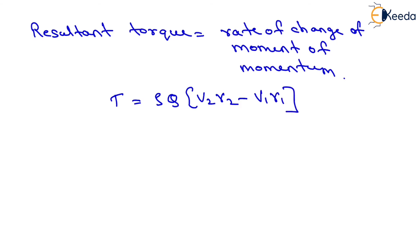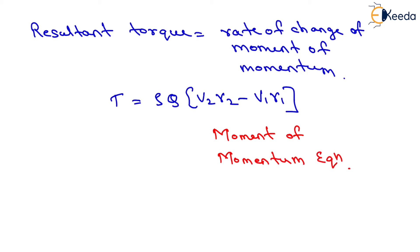This equation is known as the Moment of Momentum Equation. It can be applied for analysis of flow problems in turbines and centrifugal pumps, as well as for finding the torque exerted by water on a sprinkler.